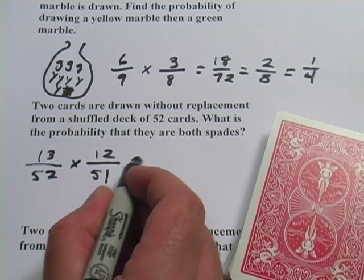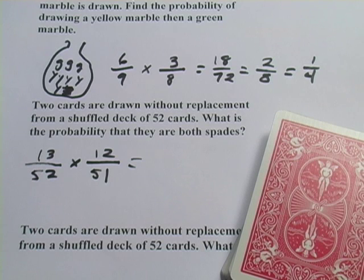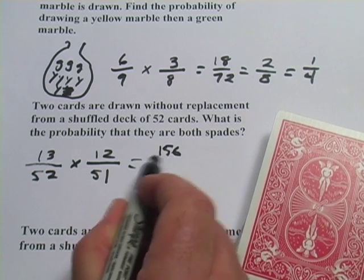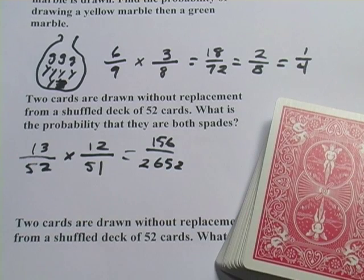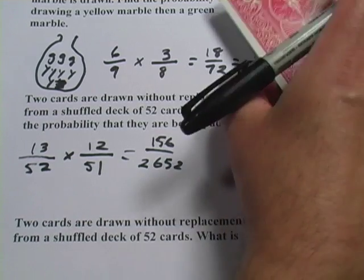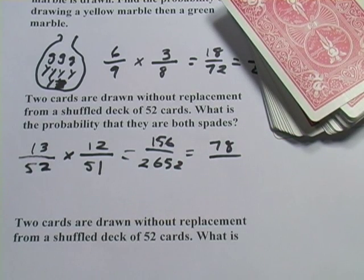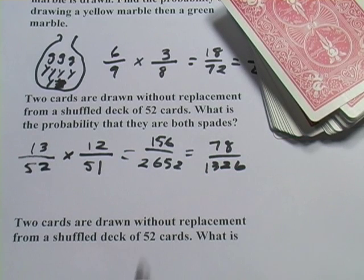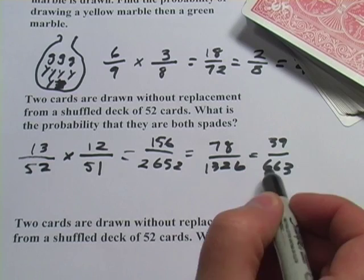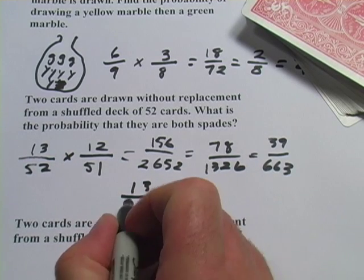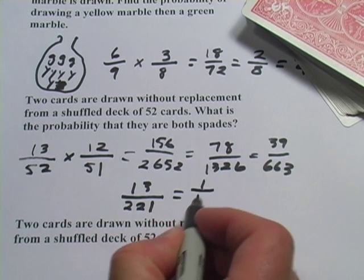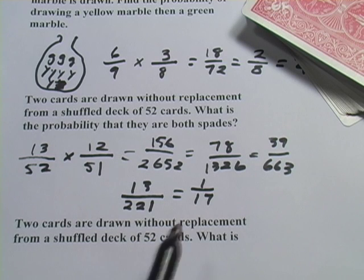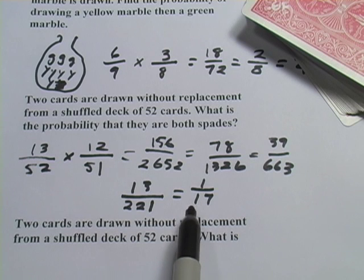And now, we need to multiply these together, and I think I need my calculator for this. Let's see, 12 times 13, that's 156. 52 times 51, that's 2,652. Well, I can at least divide both of those by 2. That would be 78 over 1,326. We can divide that by 2. We get 663 on the bottom and 39. Those look like they're divisible by 3. So if I take a 3 out of both, I would get 13 and 221. And 13 is a prime number, but we can take a 13 out of 221. So that actually comes down all the way to 1/17. So the chances of pulling 2 cards in a row out of a full deck of cards and having both be spades would be a 1 in 17 chance.